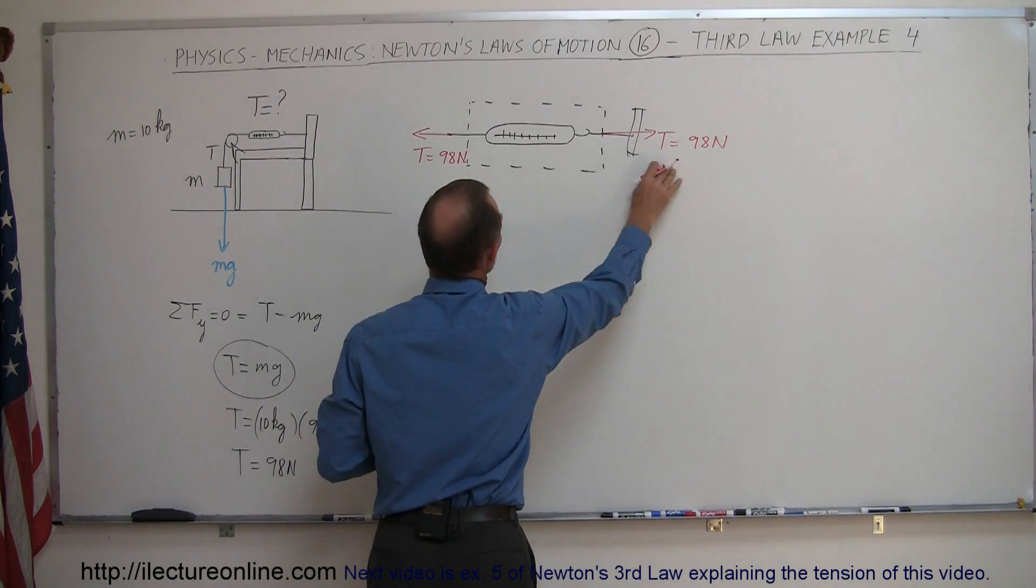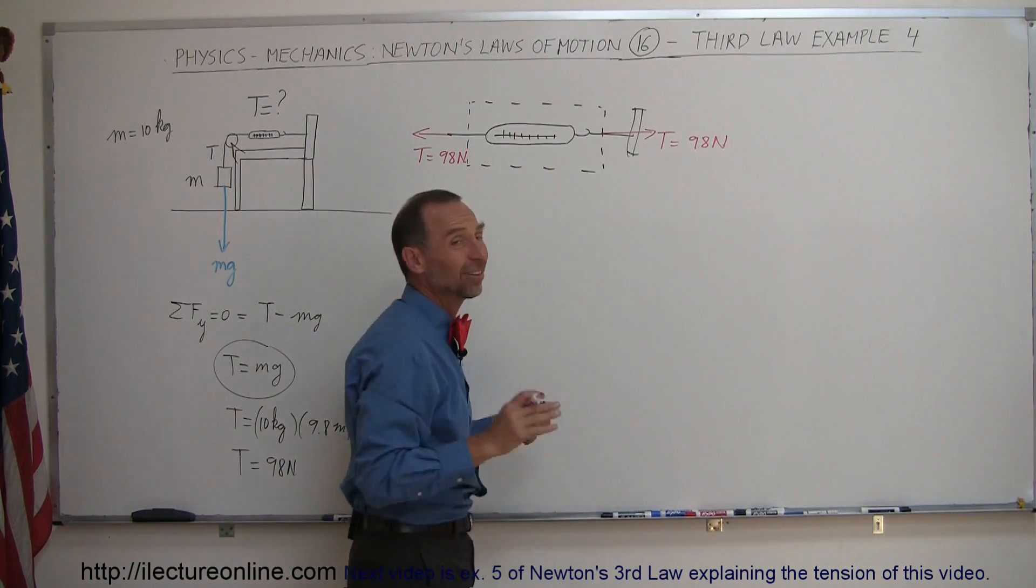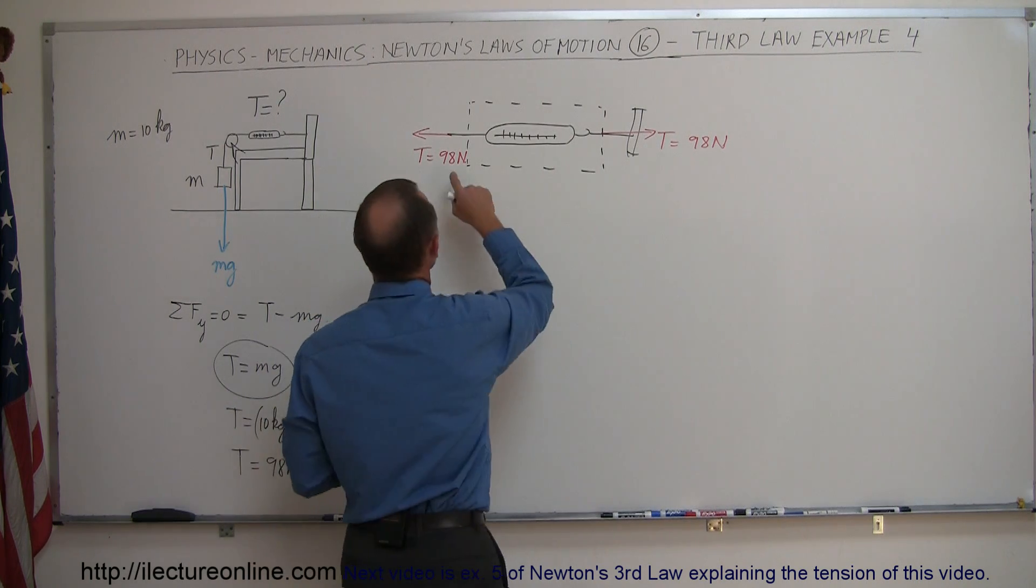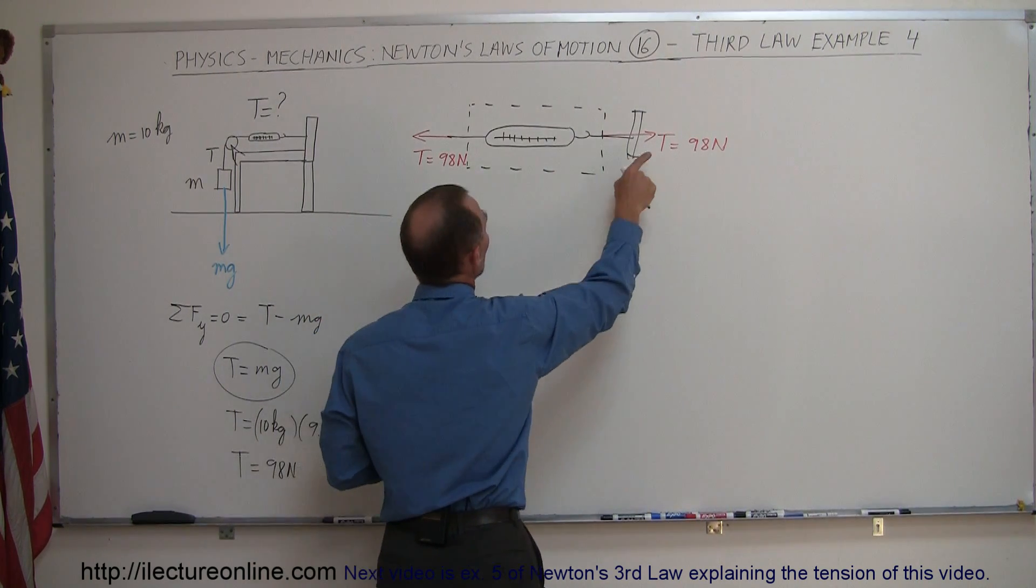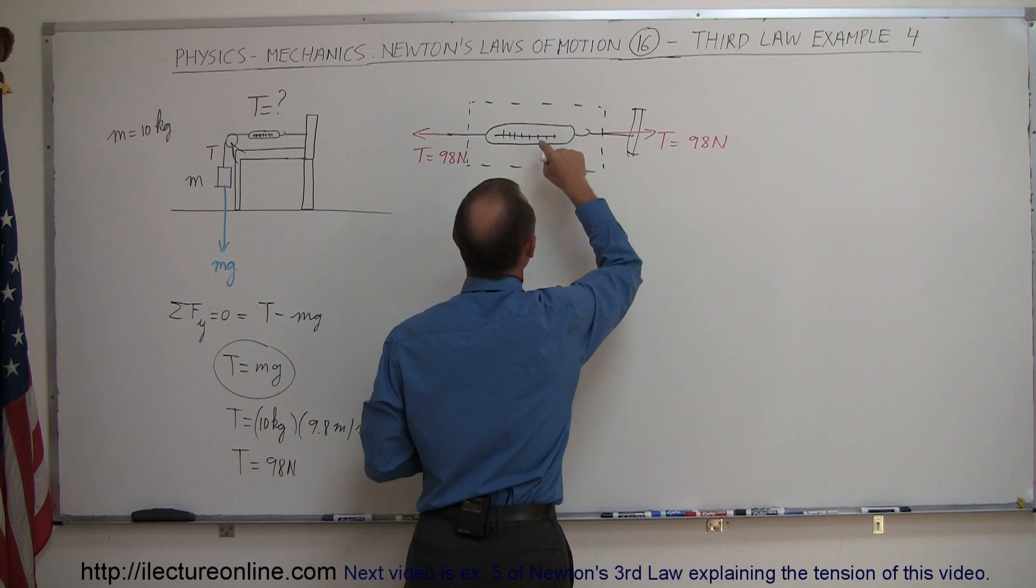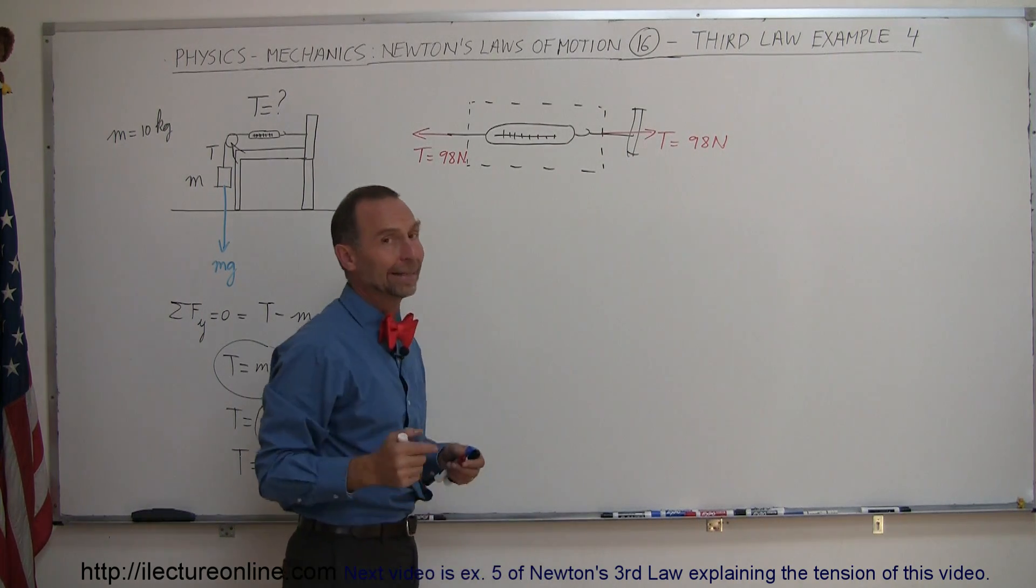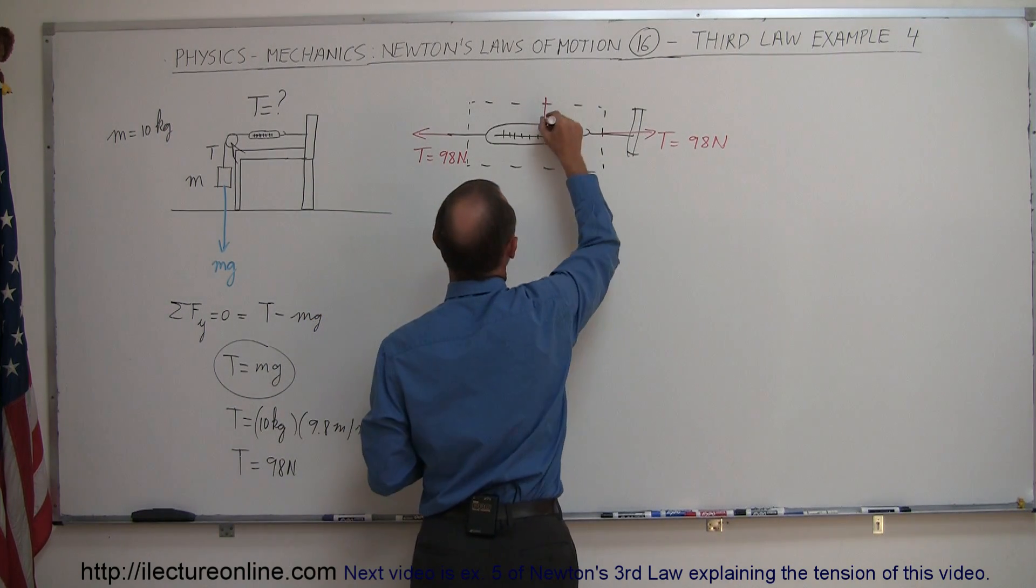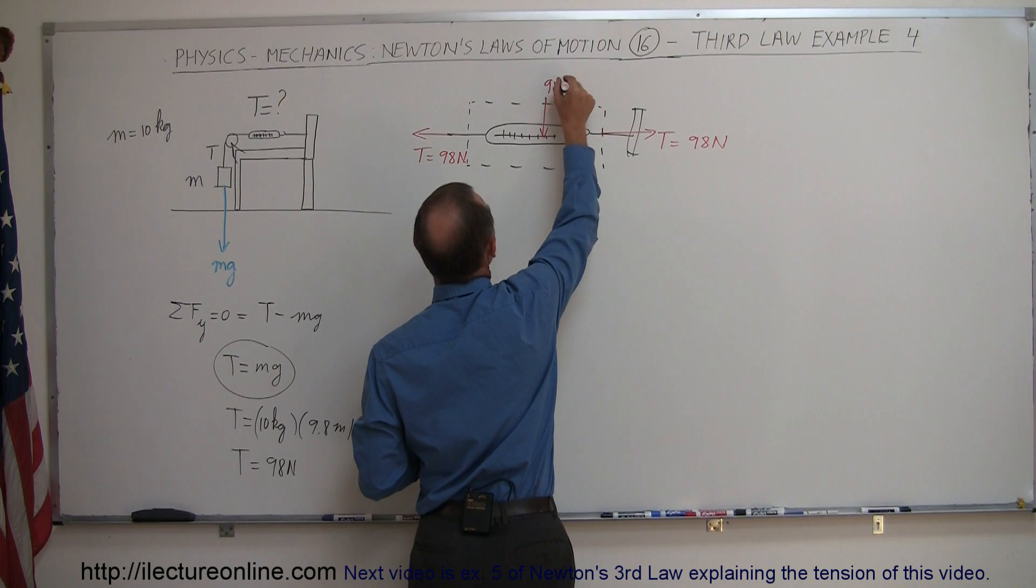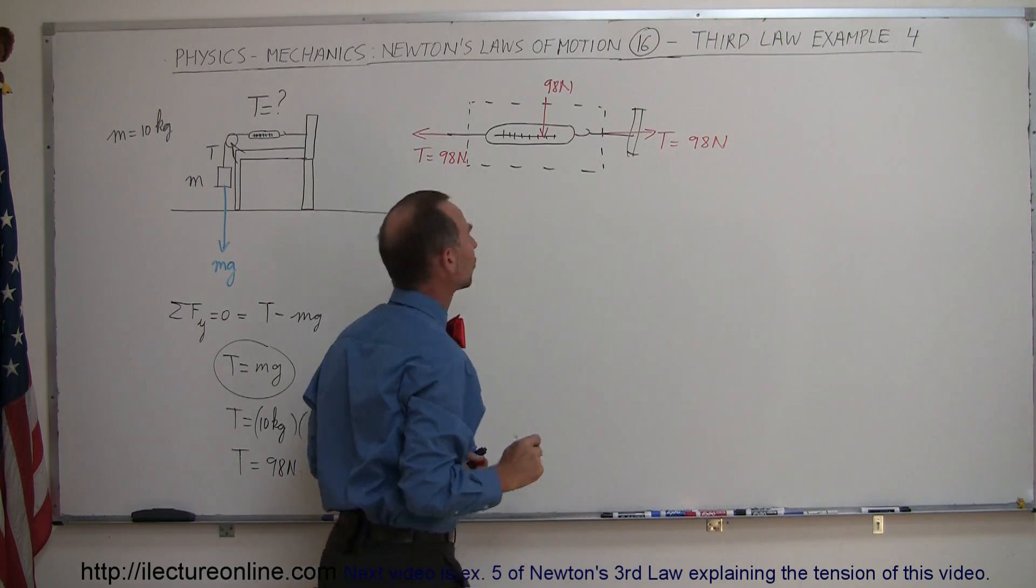And so we can see that these cancel each other out, and the scale will stay in place and not accelerate. So if we pull with a tension of 98 newtons this way, we pull with a tension of 98 newtons this way, what should this scale read? Yes, you guessed it, it should read 98 newtons, and that's the tension in the scale.